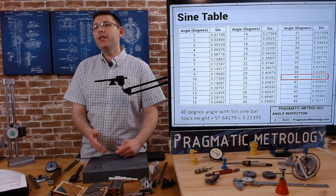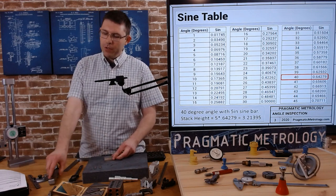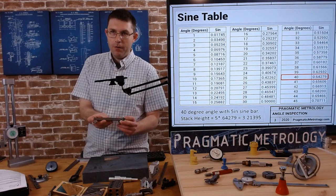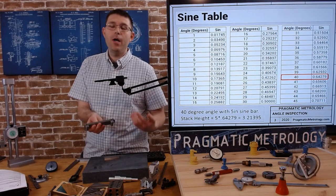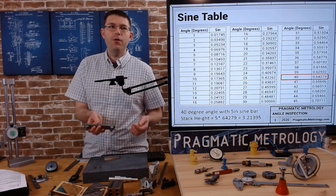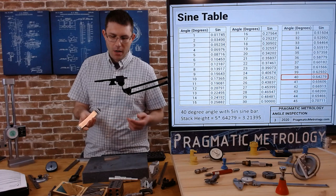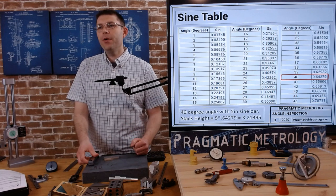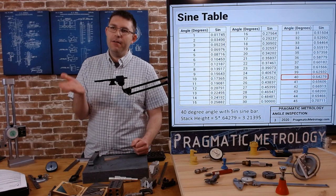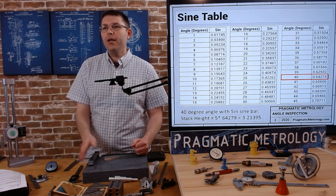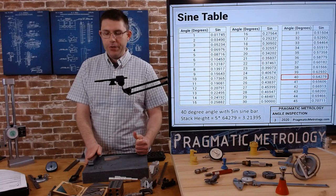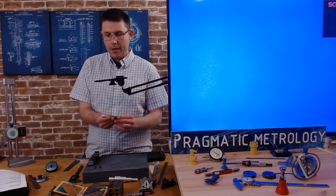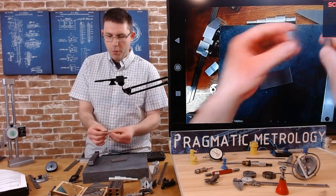The sine of 40 degrees is 0.64279, and I'm using a five-inch sine bar. Remember, the measurement is from the center of each pin — not the overall length of the bar. Five inches is most common; you'll also see ten-inch and twelve-inch sine bars. So five times 0.64279 equals 3.21395. Because it ends in a five and continues, I'll round up to 3.2140 and build a Joe block stack at 3.2140 — that means I need a three-inch block, a 0.100 block, and a 0.1140 block.